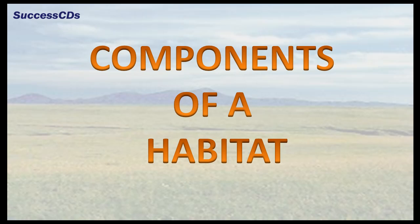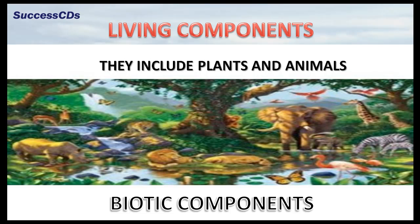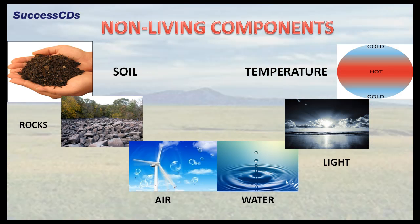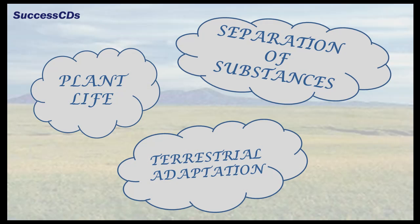A habitat consists of two main components. The living components, also called the biotic components, include plants and animals. The non-living components, also called the abiotic components, include soil, rock, air, water, light, and temperature.